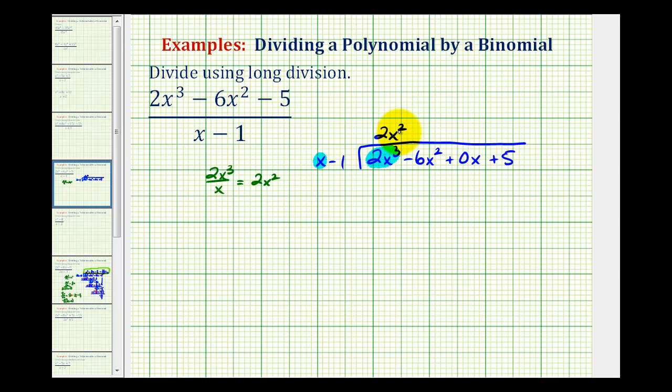Now we're going to multiply 2x² with our divisor x - 1. So 2x² times x would be 2x³, and 2x² times -1 would be -2x². When performing long division, we want to subtract this result. But instead of subtracting this binomial, it's usually easier to add the opposite. So we can change this to addition as long as we change the sign of both terms inside the parentheses. Notice how the x³ terms are opposites, so this would be zero. Then we have -6x² + 2x², that's -4x².